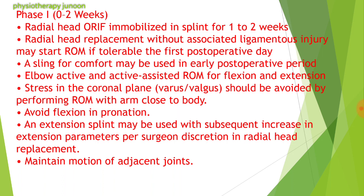Phase 1 is the immediate motion phase. Goals are to decrease pain and inflammation, regain full wrist and elbow range of motion, and retard muscular atrophy. Active-assisted range of motion of 15 to 105 degrees is initiated. By 2 weeks, begin gripping or putty exercises, begin isometric and isotonic strengthening exercises. Avoid flexion in pronation. An extension splint may be used with subsequent increases per surgeon discretion in radial head replacement. Maintain motion of the adjacent joints.